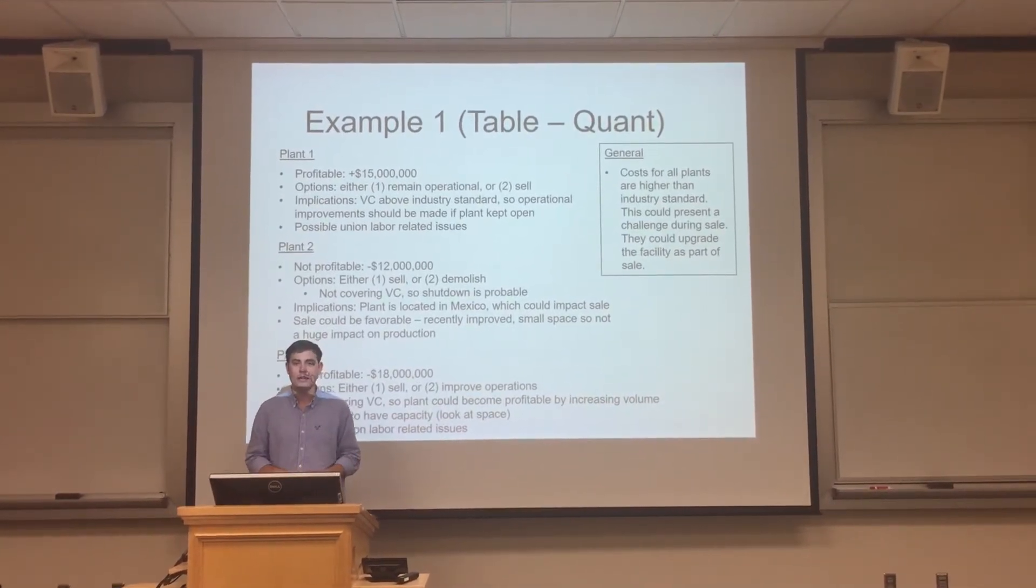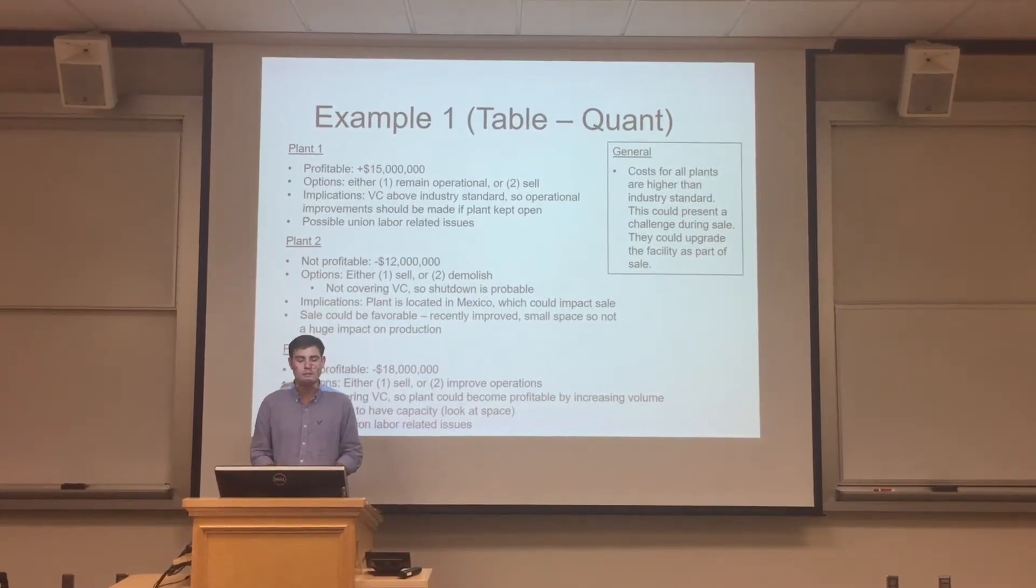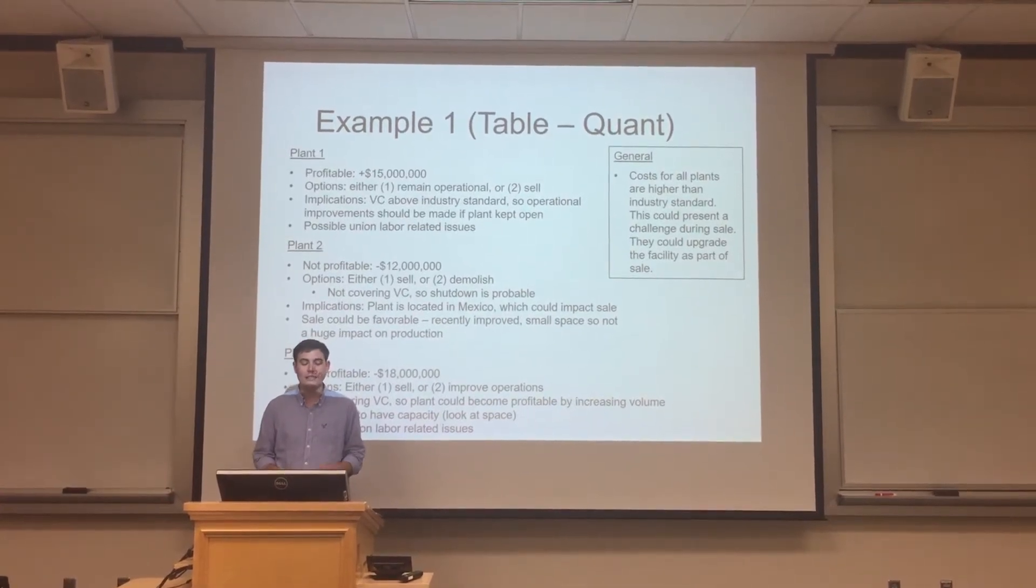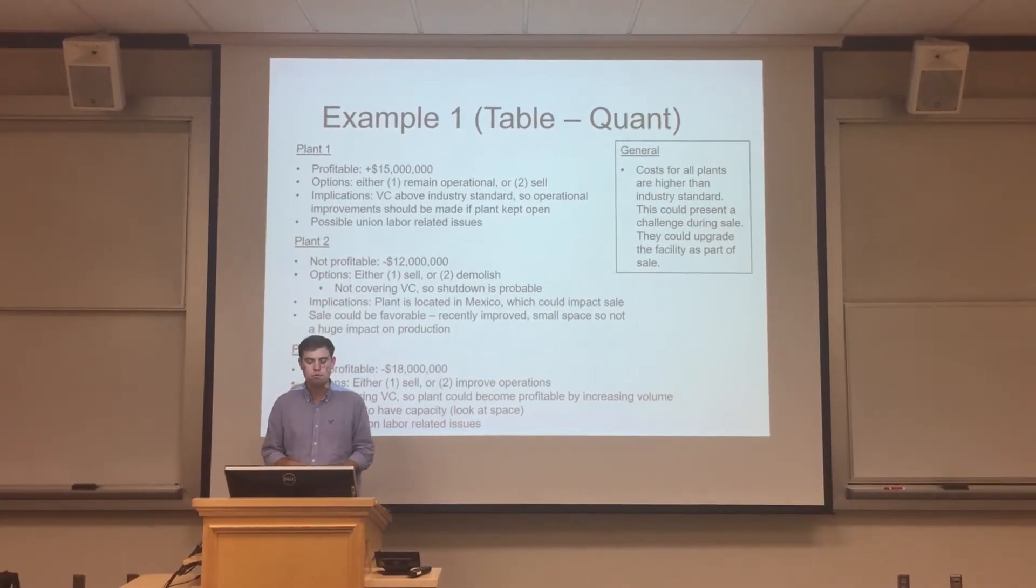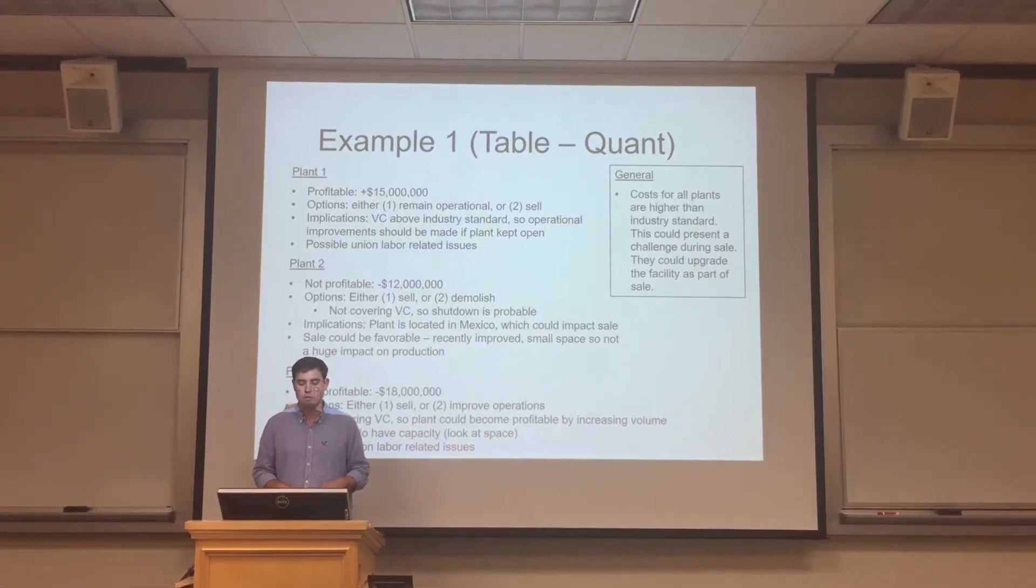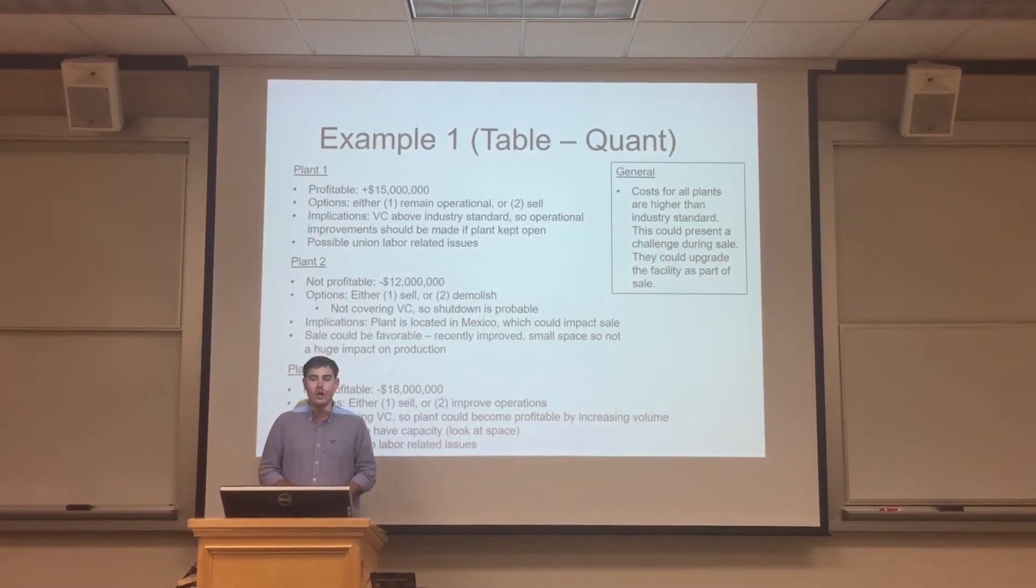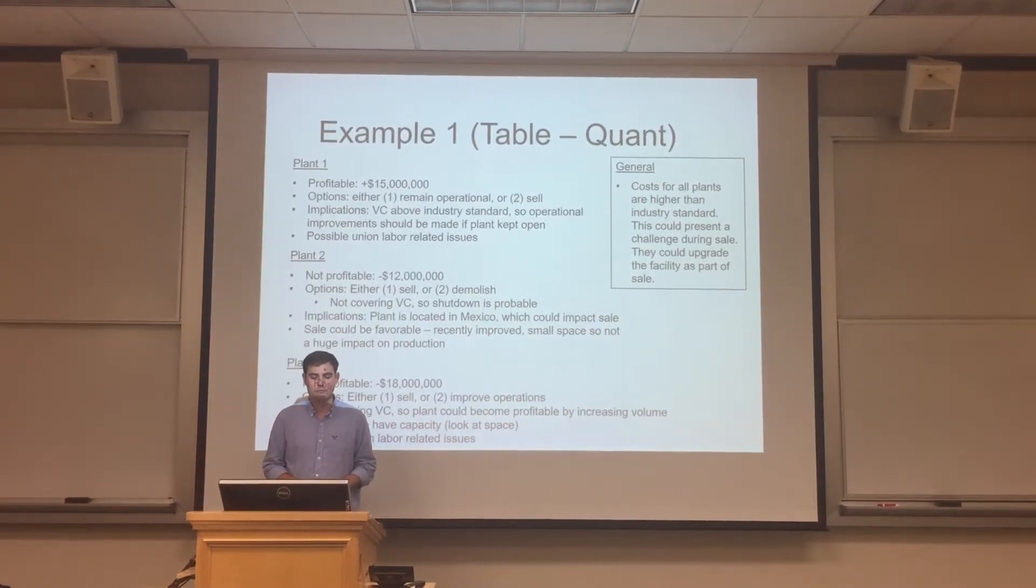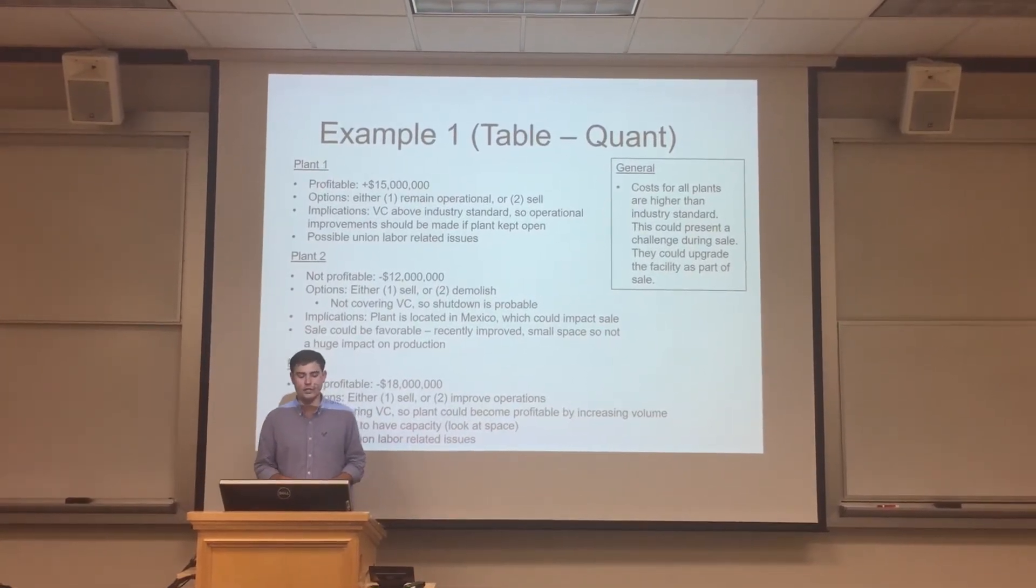Now I'm going to go plant by plant and talk about what the options are for each plant and what the implications of those options are. The first plant is profitable, making $15 million a year. That means that our client can either choose to let this plant remain operational, or they can sell the plant. One key implication of these options is that the variable costs are currently above the industry standard. So if the plant is going to be kept open, operational improvements will need to be made. Since the labor there is also unionized, that means there could be potential union labor-related issues.